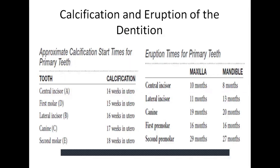Now let's talk about the approximate calcification starting time for the primary teeth — these charts are very important and need to be remembered for your dental board exams. The central incisor calcifies at approximately 14 weeks in utero, the first molar at 15 weeks, the lateral incisor at 16 weeks, the canine at 17 weeks, and the second molar at 18 weeks.